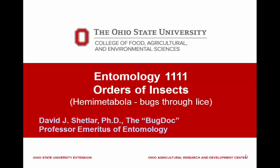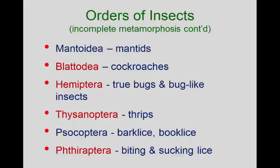Now we're going to try to finish the rest of the insects that have incomplete life cycles. What we've gone through already is the mantids, the cockroaches, and termites. Now we're on the hemiptera.